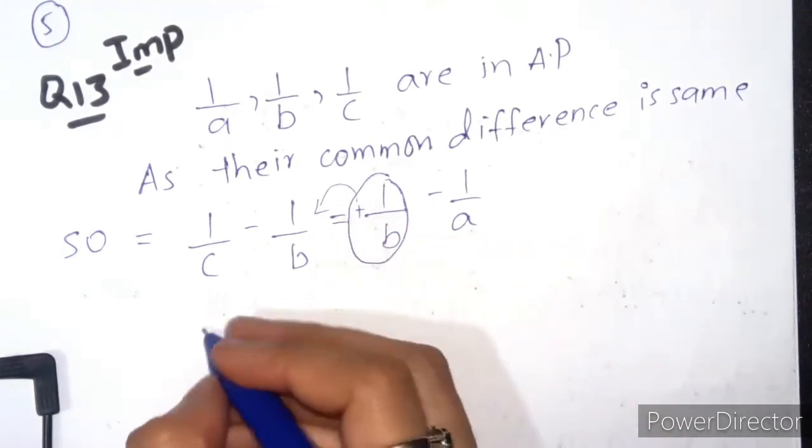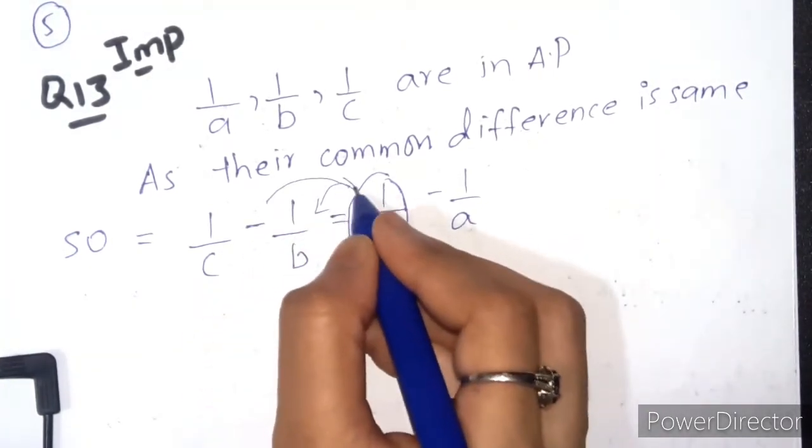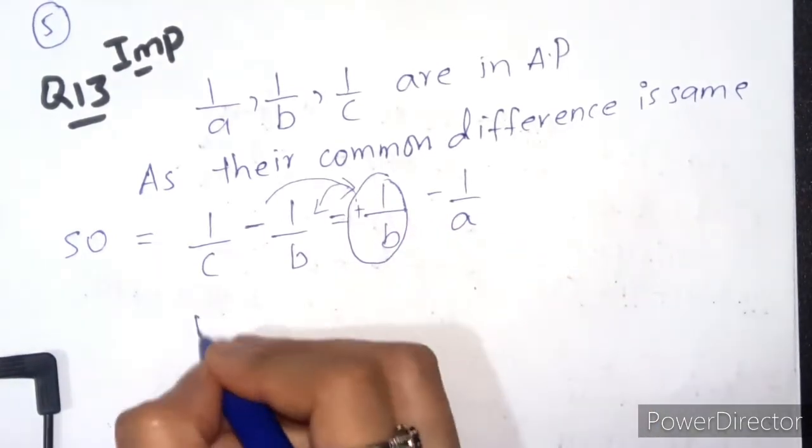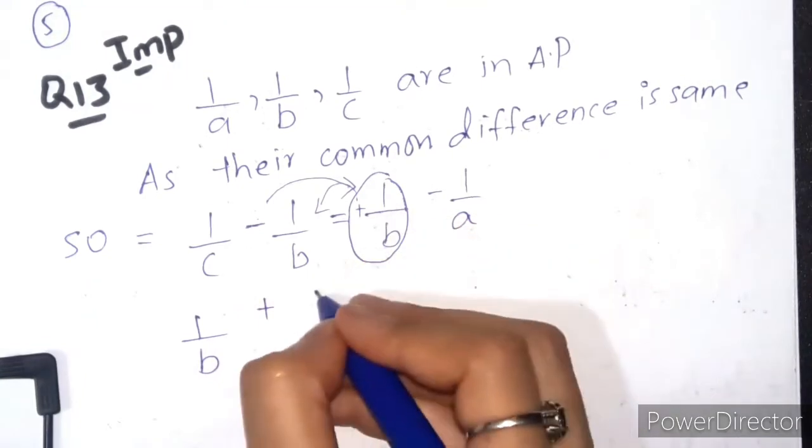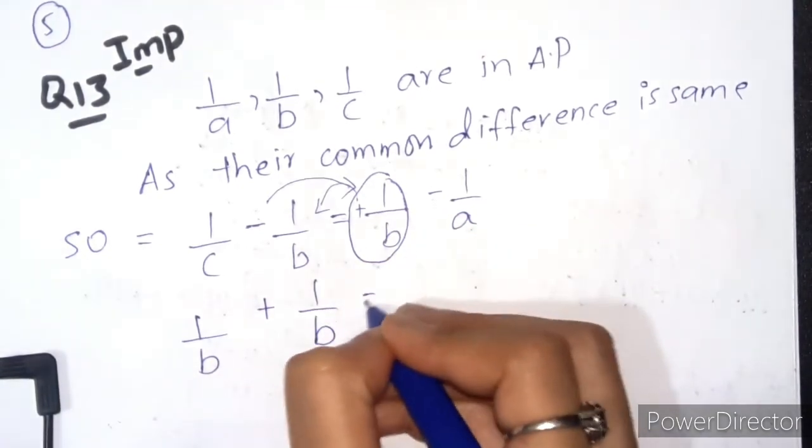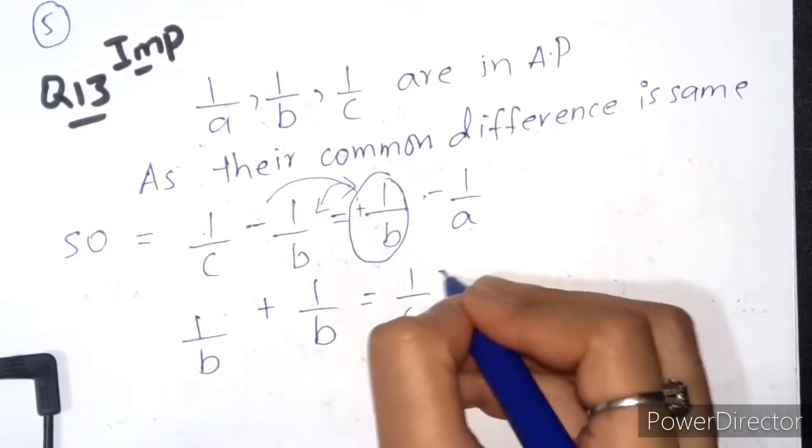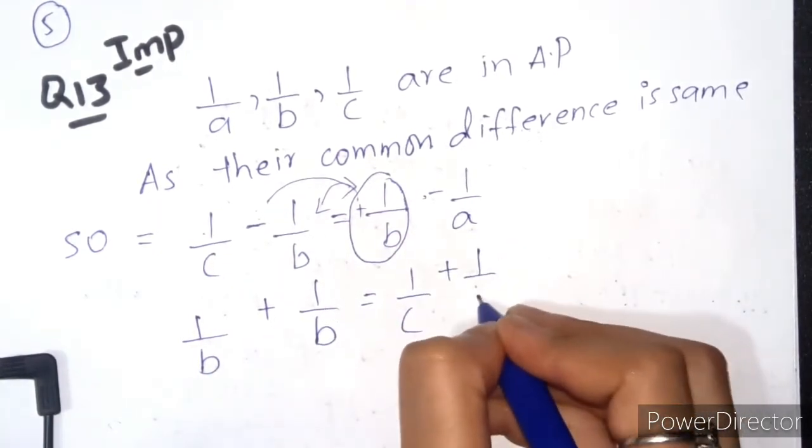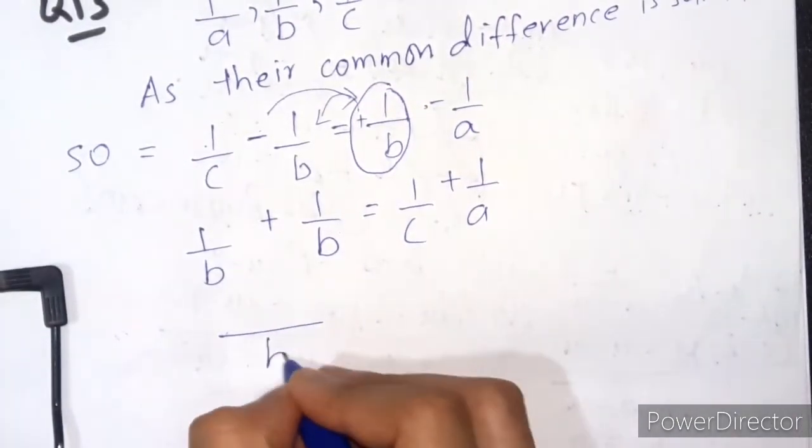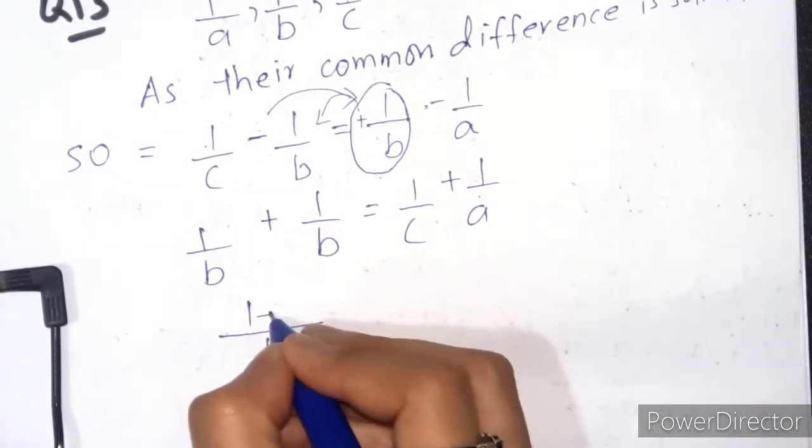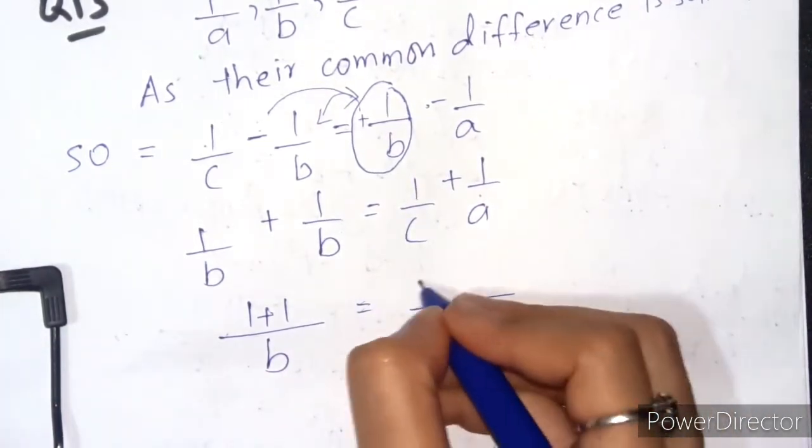Adding 1/b to both sides, we get: 1/c = 1/b + 1/b - 1/a. This equals 1/c + 1/a on the right side when rearranged.